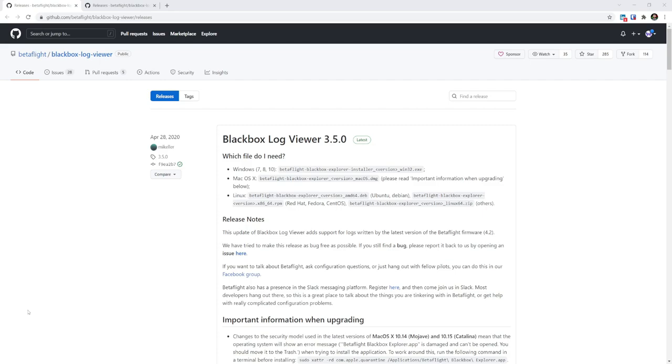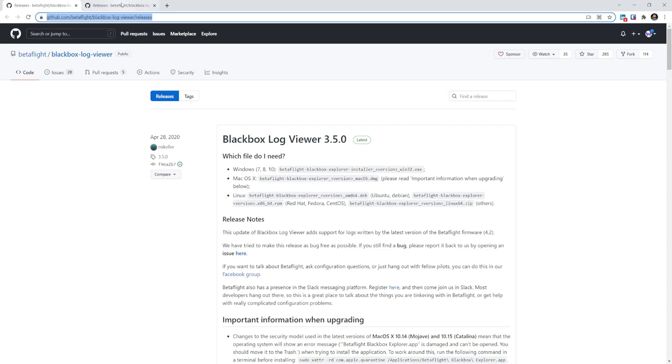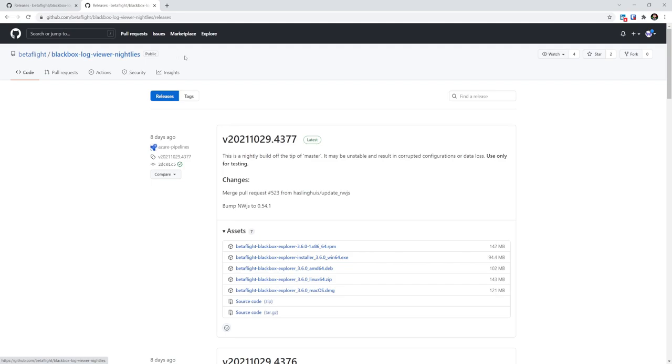To view your black box logs you're going to need to use the black box log viewer. Now the latest version of the log viewer can always be found on the releases page of the GitHub and I'll put a link to this down in the video description. You're going to need 3.6 or later for Betaflight 4.3 and you can see that the latest version we have at the moment is 3.5. The solution to this is to download the latest nightly build of the log viewer from the nightlies page and I'll put a link to this in the video description as well. I'm going to be using 2021-10-29 for this video and you can see that that's a 3.6 version of the log viewer so it will work with Betaflight 4.3. To download the log viewer just expand the assets section and pick the right one for your operating system. I'm on Windows so I'm going to be using this 3.6 Win64.